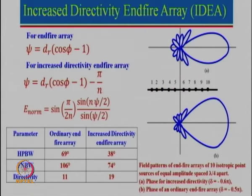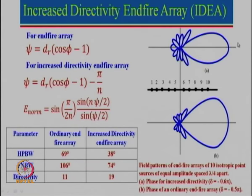This broader beam width of the ordinary end fire array results in smaller gain. Researchers then developed the concept of increased directivity end fire. To illustrate, consider 10 isotropic elements with spacing λ/4. There are two plots: one for ordinary end fire and one for increased directivity end fire — an 'idea' that changes directivity.